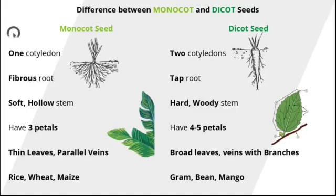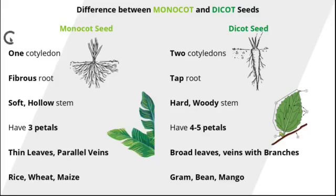Cotyledon is a seed leaf. Embryo is a young baby plant. Seed hole is the hole through which the seed absorbs the water. And the seed coat is the outer covering of a seed.